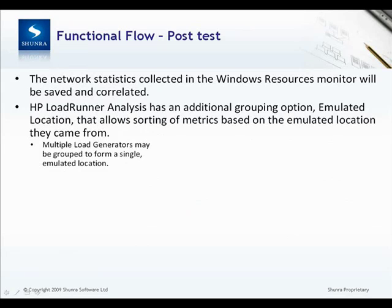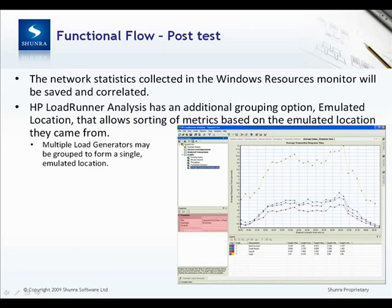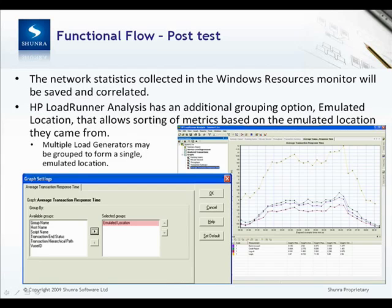Multiple load generators may be grouped to form a single emulated location. From the LoadRunner Analysis graph, under Properties, you can click on Group By. Within Group By, you'll find the Emulated Location option.